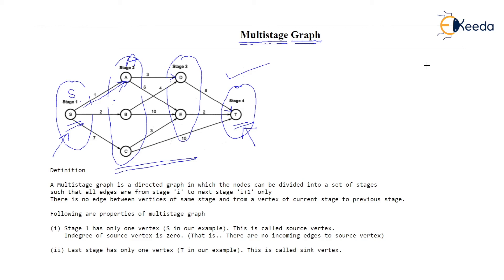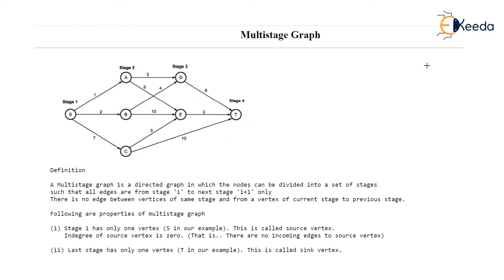One more property you observe in this multi-stage graph is that stage 1 contains only one vertex, S, and this vertex S has only outgoing edges — there is no incoming edge to S. We call such a vertex a source vertex. So the very first vertex of stage 1 is known as the source.